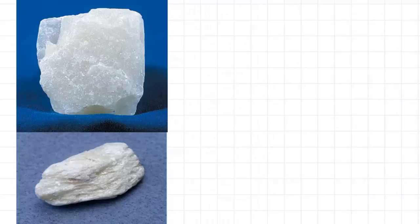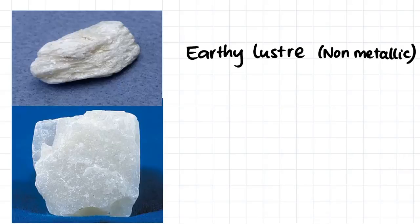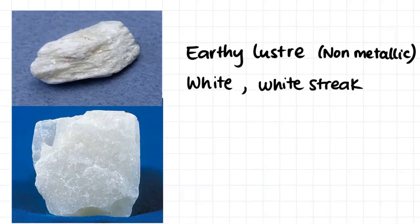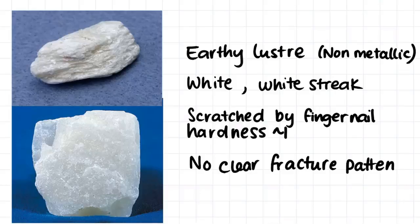This is the first mineral sample we're going to have a look at. For all the mineral samples, I've included two photos of each sample, just to show you that the same mineral can always look quite different. This mineral has an earthy luster, and the luster is definitely non-metallic. The mineral is a whitey color, and when we scrape the mineral along a ceramic plate, we see that it produces a white streak. We can scratch the mineral with our fingernail quite easily, and it has a hardness of 1 on Mohs scale of hardness. The rock doesn't show any clear fracture patterns, and something else we notice is that it has quite a waxy feel when we pick it up.